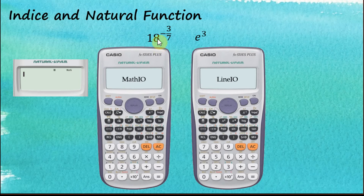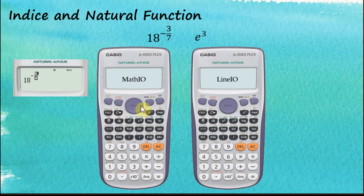So 18 to the power of negative 3 over 7. Let's start: 1, 8, then to the power of button, then negative, and we have a fraction here so we use the fractions container, then 3 over 7, and press equal.